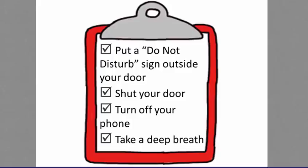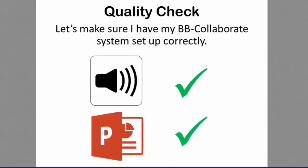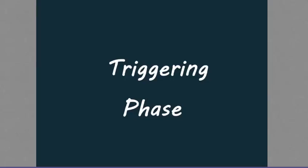Put a Do Not Disturb sign outside your door, shut your door, turn off your phone, and take a deep breath. Let's make sure that I have everything set up correctly. My sound is working and my slides are visible, so let's go ahead and begin.